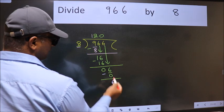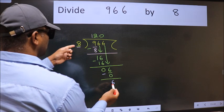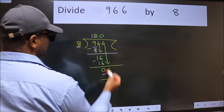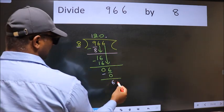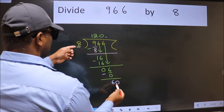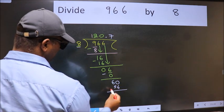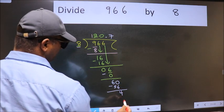Over here, we did not bring any number down, and 6 is smaller than 8. So now we can put dot and take 0. So, 60. A number close to 60 in 8 table is 8 times 7 is 56. Now we subtract. We get 4.